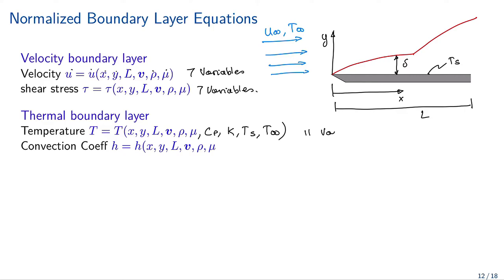For the heat transfer convection coefficient we also have 11 variables — CP, K, Ts, T-infinity. With so many variables to account for when planning experiments, it is very useful to use a dimensionless way of representing the problem.